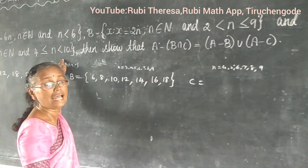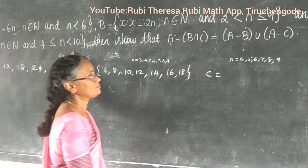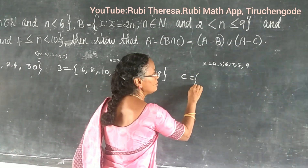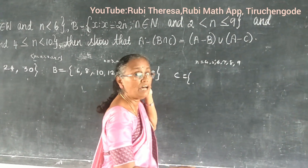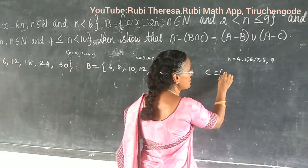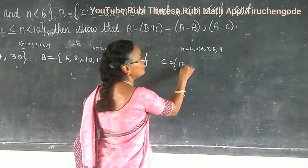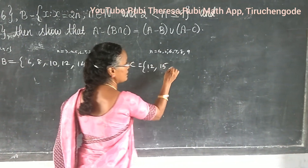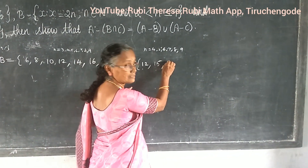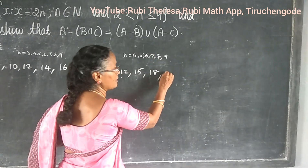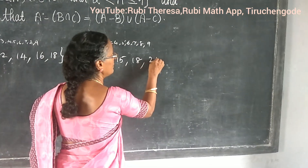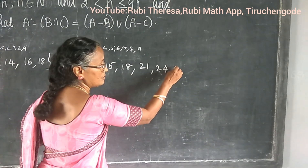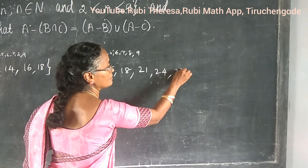Why stop at 9? Because n is less than 10. Now multiply by 3: 3 times 4 is 12, 3 times 5 is 15, 3 times 6 is 18, 3 times 7 is 21, 3 times 8 is 24, 3 times 9 is 27. So C equals {12, 15, 18, 21, 24, 27}.